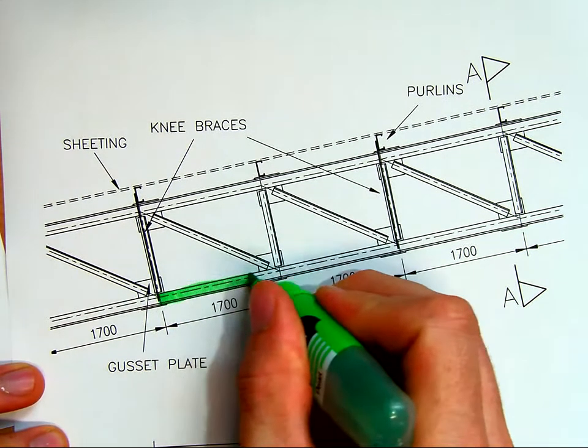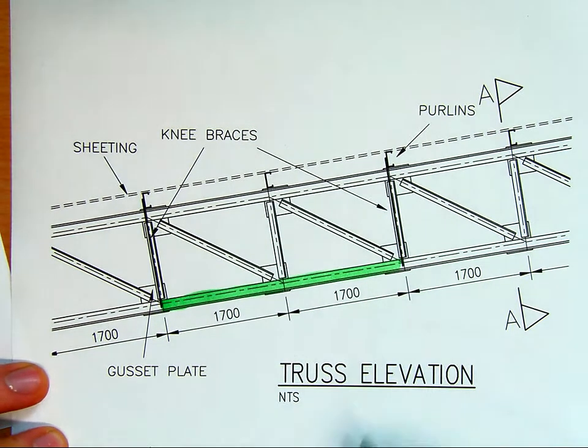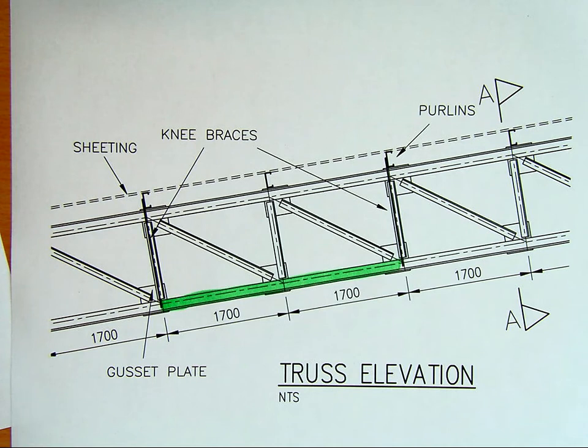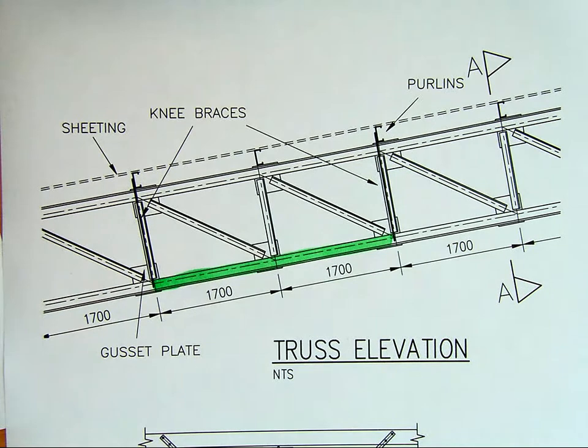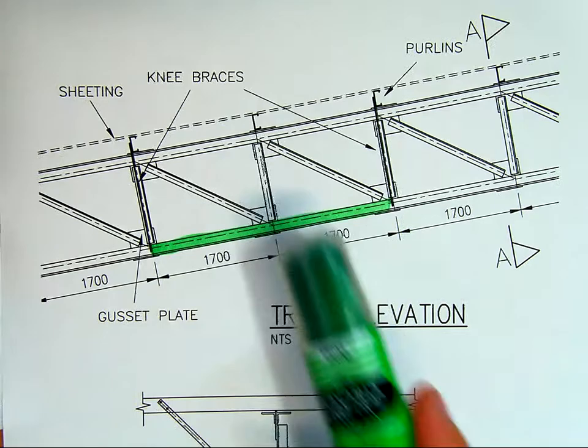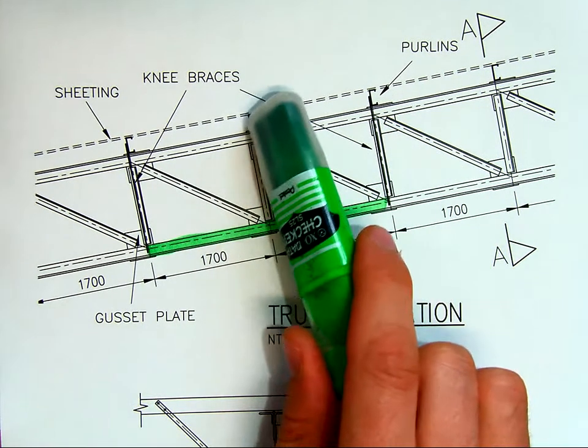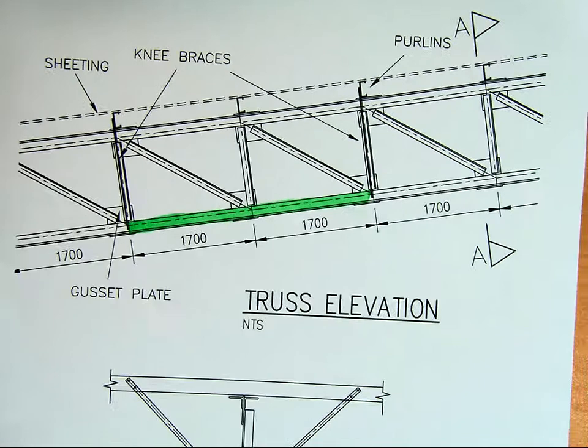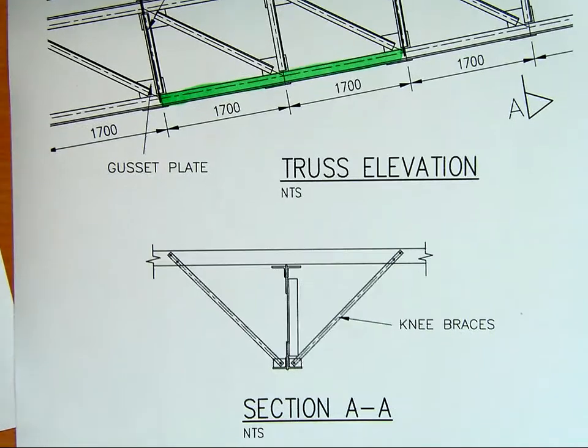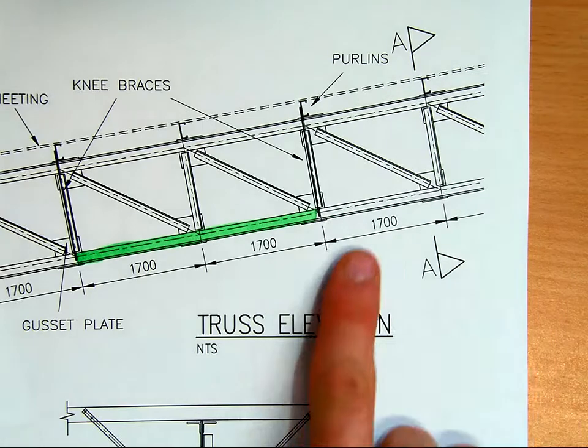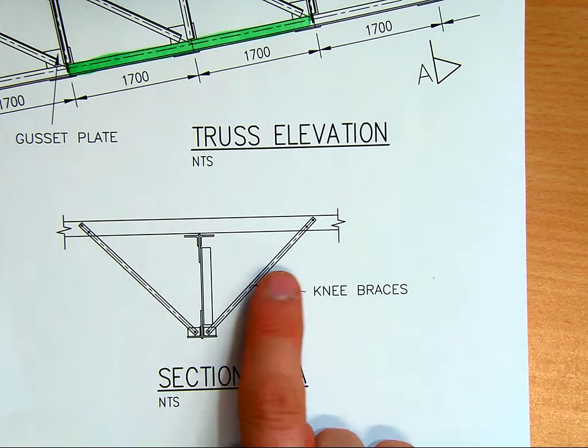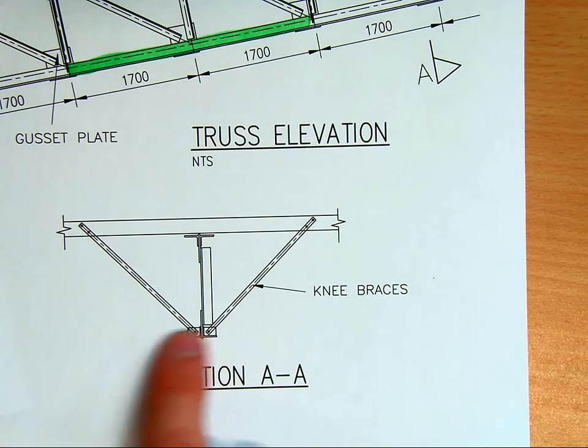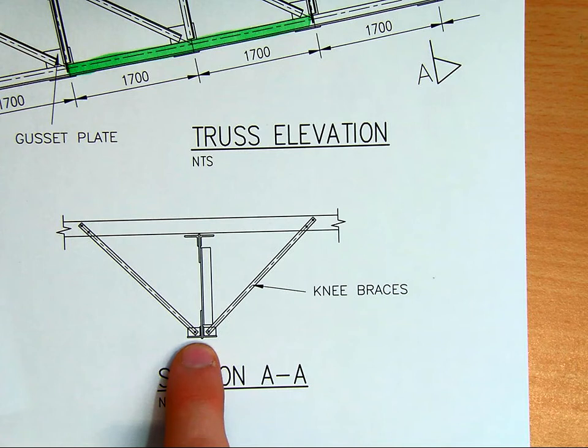It's about 1700 millimeters between purlins. We want to design this section here. The way I've drawn this is not to scale, I've enlarged the size of the members just so you can see it, but we're designing that green element, and it is restrained because of the members around it. This is a section through it, section AA, which we've just taken through a typical section there, with some sort of brace that goes up to the purlin above and prevents this thing from buckling sideways. So we call that a knee brace.